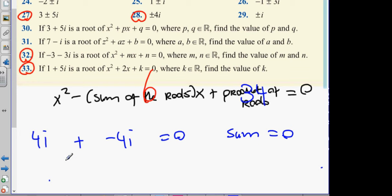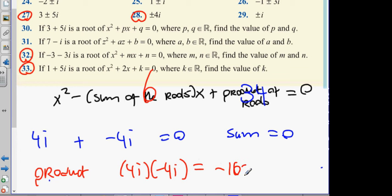Now, on the product. And the product means you multiply them together. So, it's going to be 4i multiplied by minus 4i. We're just going to get minus 16i squared. Minus 16i squared is minus 16 times minus 1, which is 16.